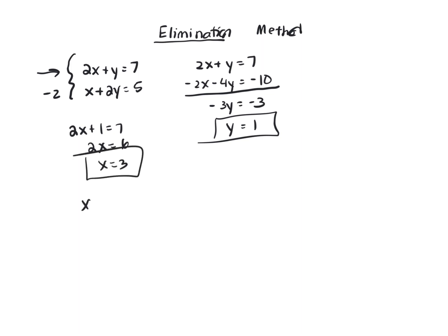And the problem we're trying to find is x plus y divided by 3. So x is 3 plus y is 1 all over 3. That gives you an answer of 4 thirds.